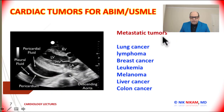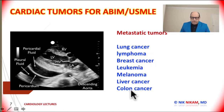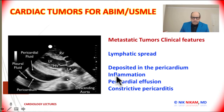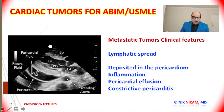Let us talk about the metastatic tumors. In order of frequency, tumors arising from the lung, lymphoma, breast, leukemia, melanoma, liver, or colon can have seeds of metastasis in the pericardial space. Most of these metastatic tumors are spread through the lymphatic system and are deposited on the pericardium. This can provoke an inflammatory response, which can result in pericardial effusion. Extensive metastatic disease can cause constrictive pericarditis, which is extremely rare.